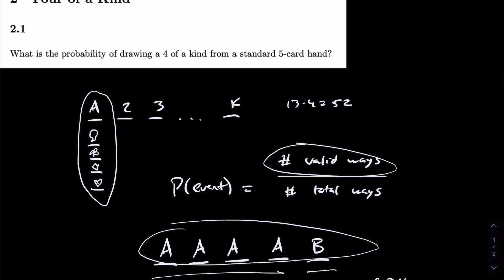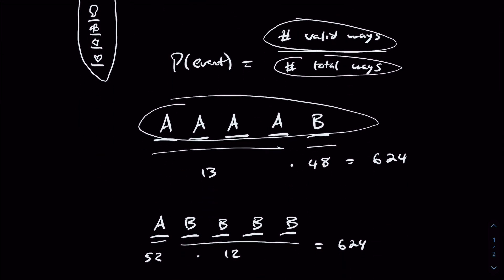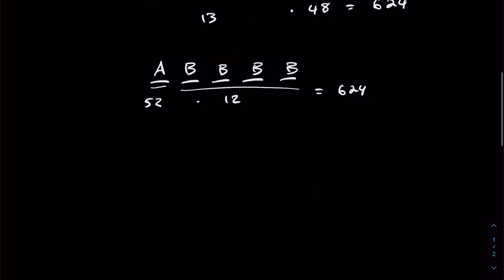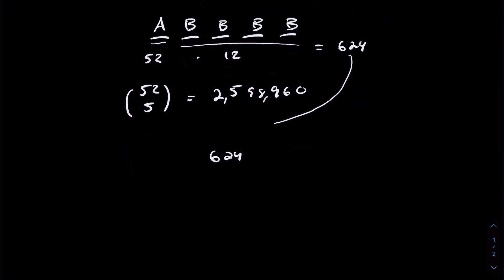Now before we conclude this problem, it asks for the probability, so we need to divide by the total number of ways. From combinatorics or discrete math, this reduces to a simple counting problem: we have 52 total options and from them we want to choose five. This ends up being quite a large number — to be exact, 2,598,960 total ways to draw five cards from 52.